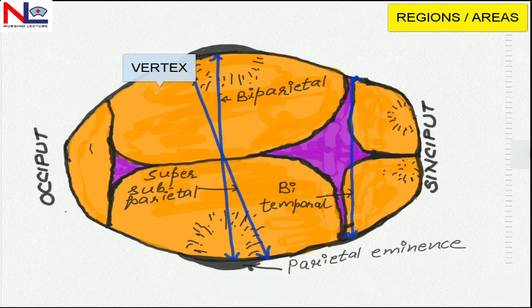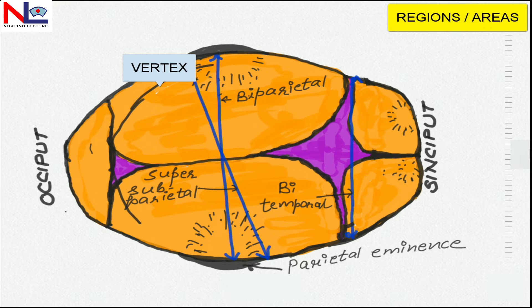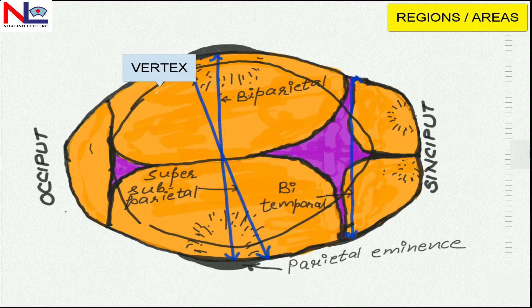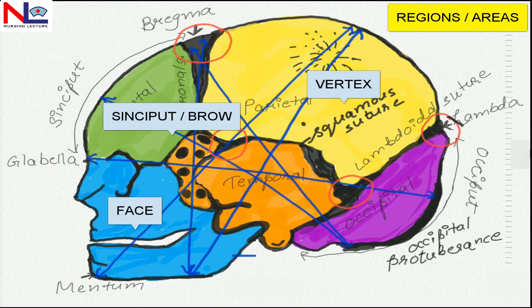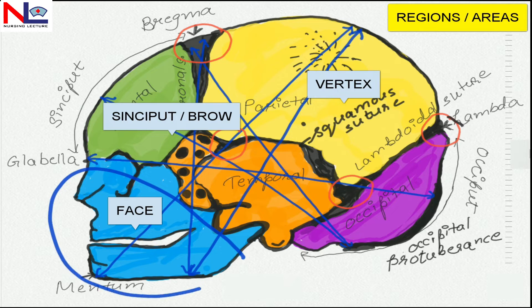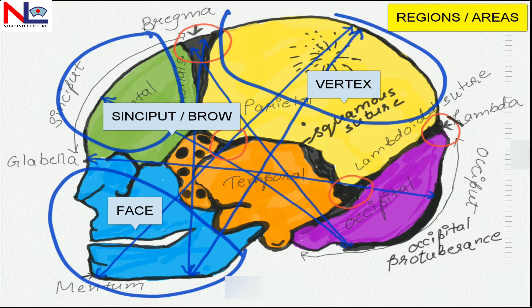To see the next region, that is the vertex: it is bounded posteriorly by the posterior fontanel, laterally by the parietal eminences, and anteriorly by the anterior fontanel or bregma. So it is a quadrangular area. We have seen the three regions — the face, the sinciput or brow, and finally the vertex.